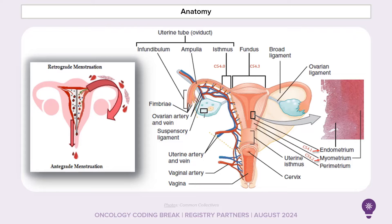Then there's the parametrium, which is the outer connective tissue membrane. The fundus is the dome above where the fallopian tubes enter. The ovaries are attached to the uterus by the ovarian ligament. The ovaries are not attached to the fallopian tubes — instead, there is a small amount of space there. The fallopian tubes are lined with epithelial tissue, very similar to what's in the uterus.